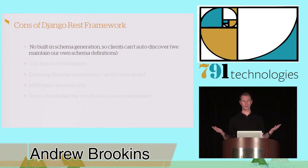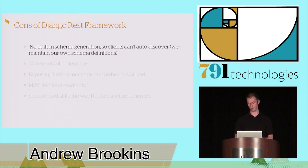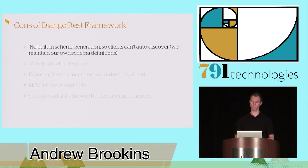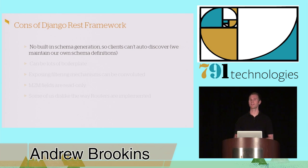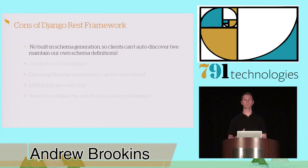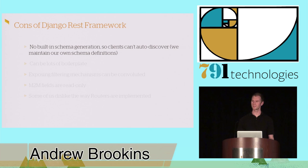But I'm not going to say it's the best thing on earth — everything has a couple of flaws. One thing we really miss from TastyPie is there's no built-in schema generation in Django REST Framework. Clients can't auto-discover, and we have to maintain our own schema, which is pretty common when you have an API. I don't really like having to go update a schema file every time I change the API. We have an in-house REST client that can read the schema, so hopefully someone will release a package for this someday.